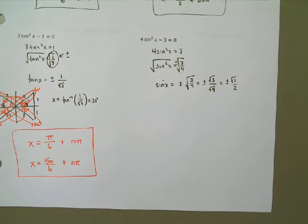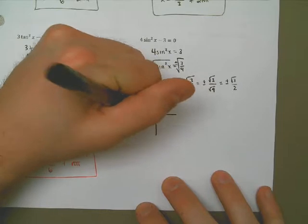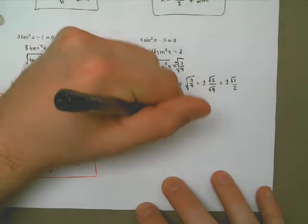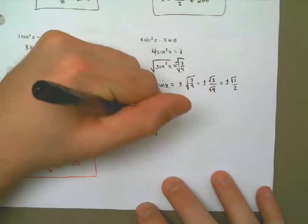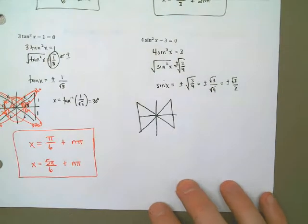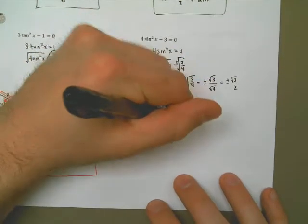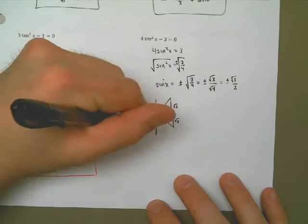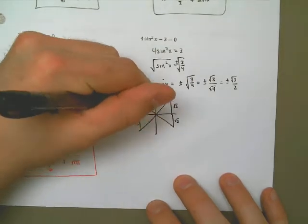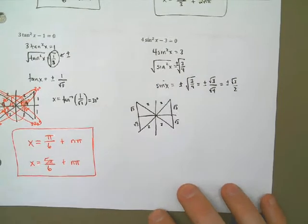I got plus and minus, so that means I'm going to be using all four quadrants. I'm going to draw four triangles again. What I know is every one of those triangles has an opposite of square root of 3, and every one has a hypotenuse of 2. The angle on the inside, instead of being 30 degrees like we did on the problem on the left, is 60 degrees. Of course, you could have done arc sine and it would have told you that.